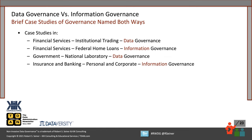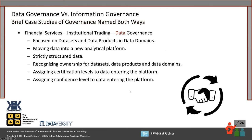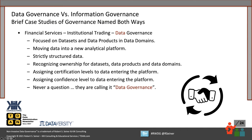Let's look at a few organizations and see how they went about selecting their names. In the financial services space — a financial institutional trading organization not located in the United States — they're focused on data sets and data products within specific domains. They're moving their data into a new analytical platform, applying governance as they move to it, and focusing strictly on structured data. They're recognizing ownership, assigning certification levels and confidence levels of the data. There was never a question — they were going to call it data governance.